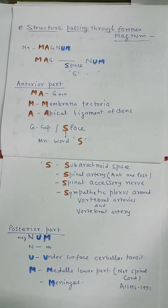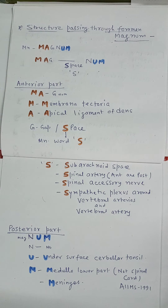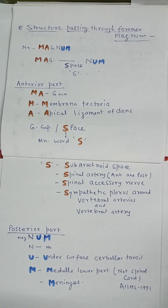Posterior part — the mnemonic is U-M of MAGNUM. For N it's Nothing. For U it's the Under Surface of Cerebral Tonsil. For M it's Medulla — the lower part, not the Spinal Cord. This was an MS 1991 exam question. For M it's also Meninges.